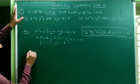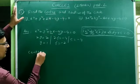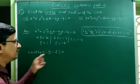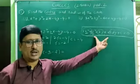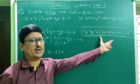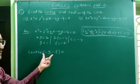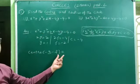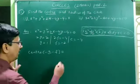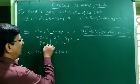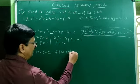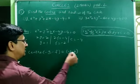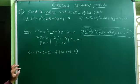Now what we have to find first is the center. The center of the circle x² + y² + 2gx + 2fy + c = 0 is (−g, −f). The center of the given circle is (−g, −f) = (−1, −(−2)) = (−1, 2).